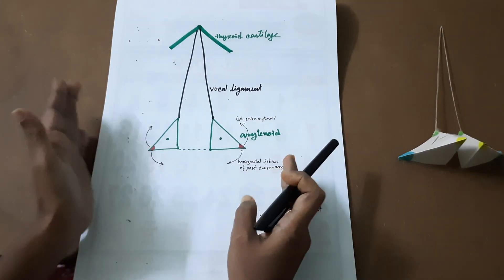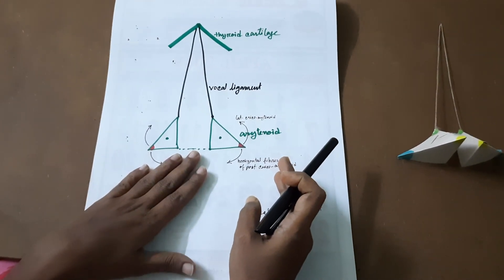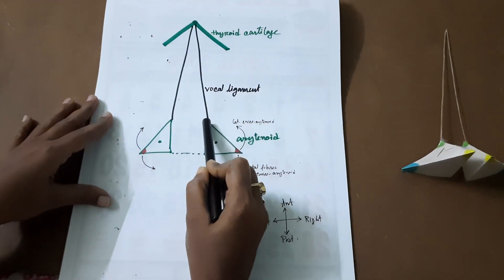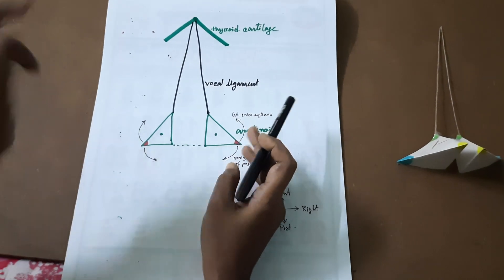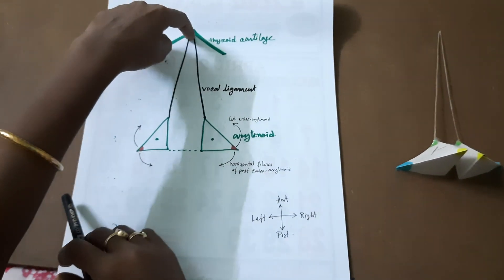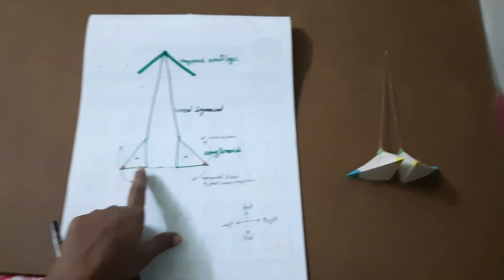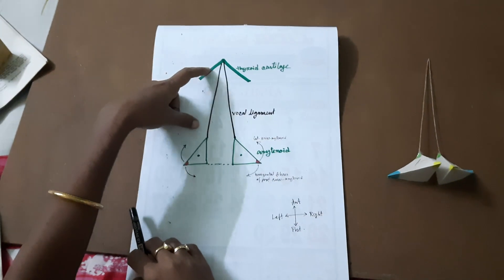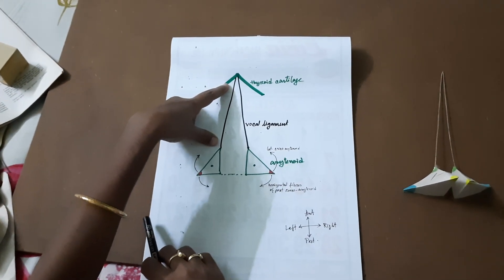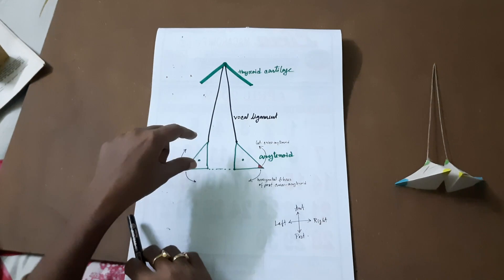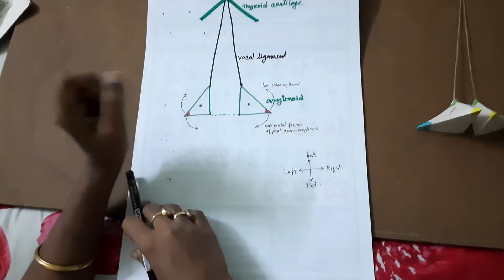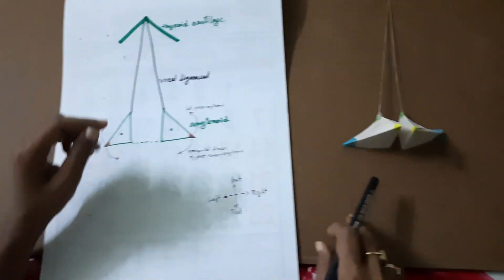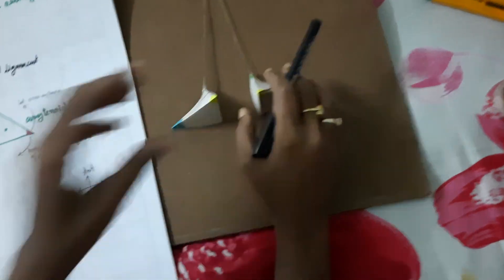In normal respiration the shape of the Rima Glottidis is pentagonal — five sides as you can see. To recap the boundaries: anteriorly the angle of the thyroid, posteriorly the inter-arytenoid fold, and on each side the anterior three-fifths is formed by the vocal ligament and the posterior two-fifths by the arytenoid cartilage.